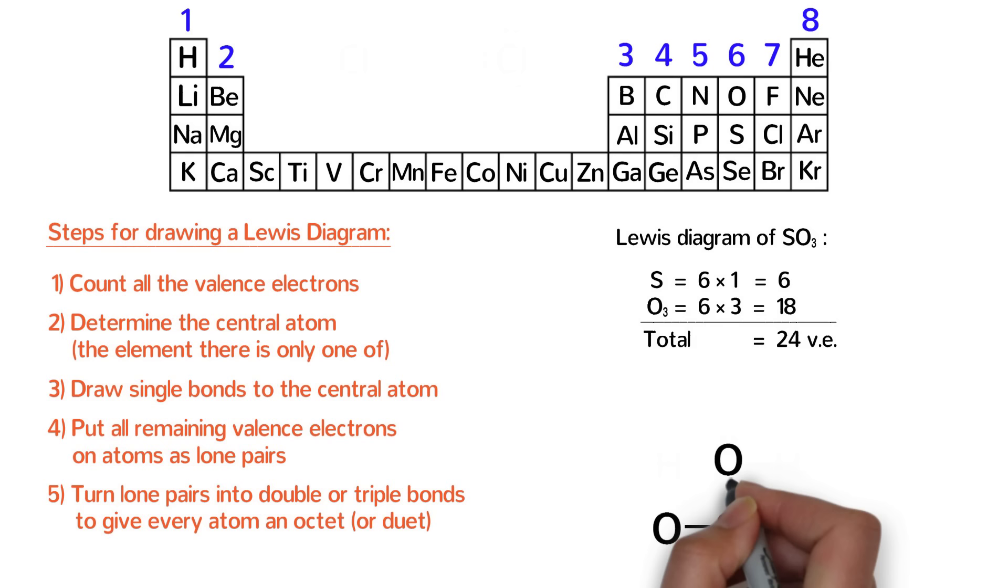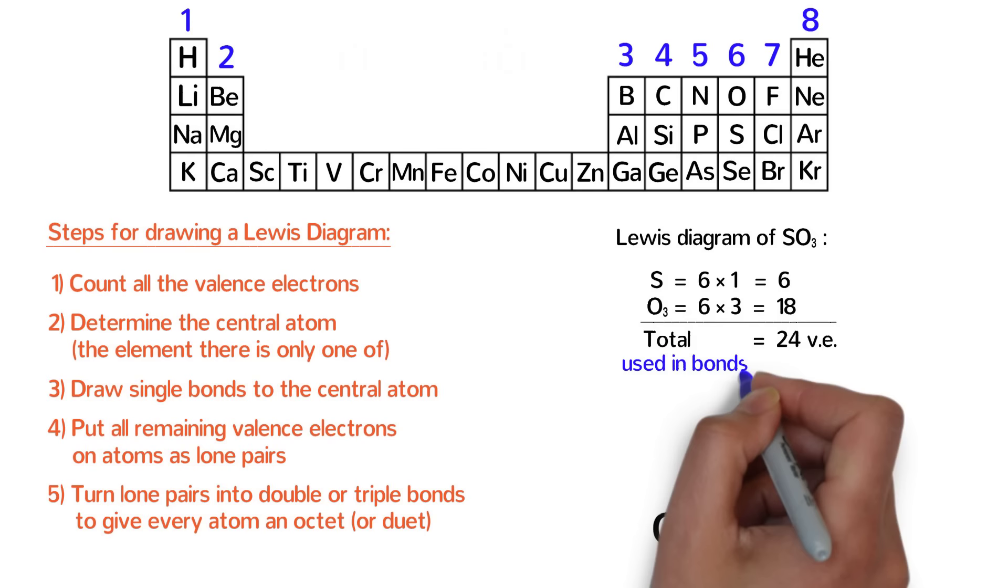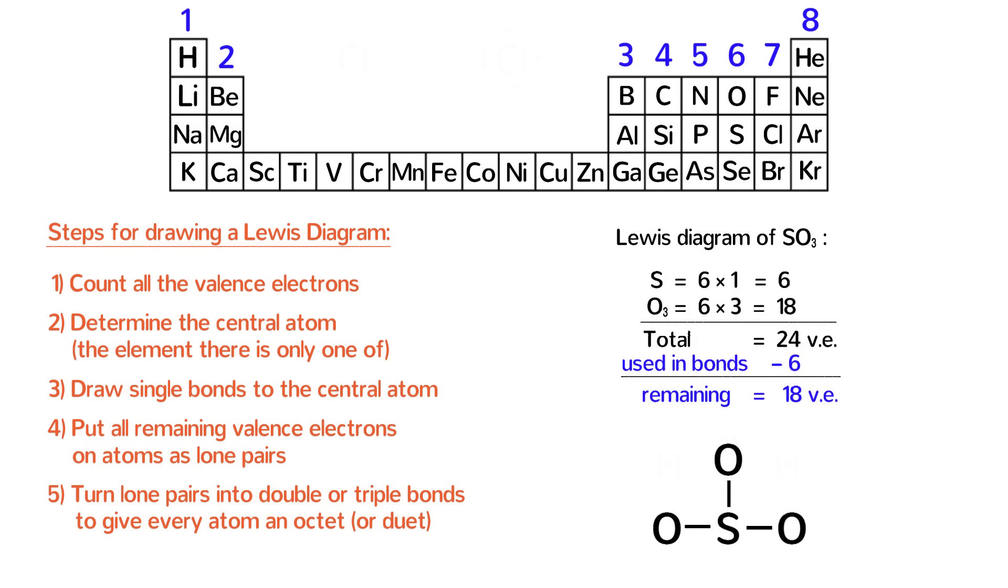Step 4. We started with 24 valence electrons, and we have used 6 electrons to make the three single bonds. This means that we have 24 minus 6, or 18 valence electrons remaining. We now put those remaining 18 valence electrons on atoms as lone pairs. Count by 2's when adding them. 2, 4, 6, 8, 10, 12, 14, 16, and 18 valence electrons. That's it. We've now used up all of our valence electrons.